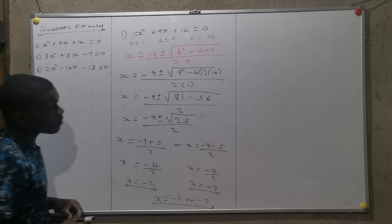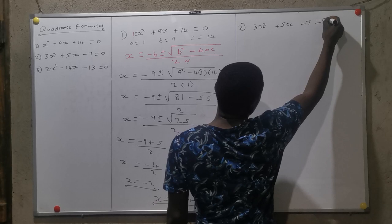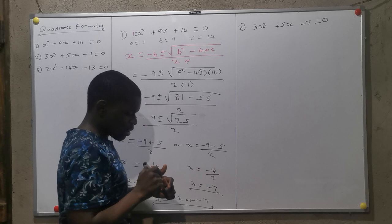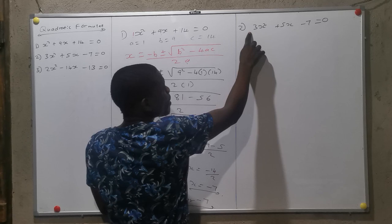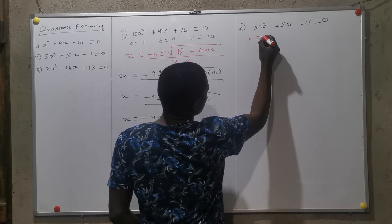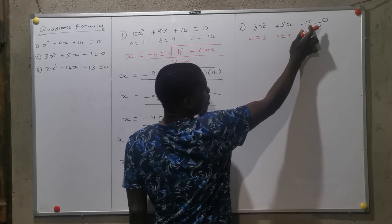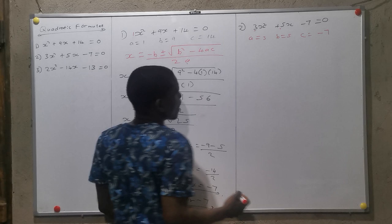Number 2: 3X squared minus 5X minus 7 is equals to 0. Same concept. I'm going to identify my constants. Remember that constants are the coefficients - the numbers before the letters. So I'm going to say A is equal to 3, B is equal to negative 5, and C is equal to minus 7.